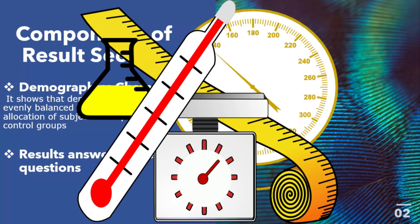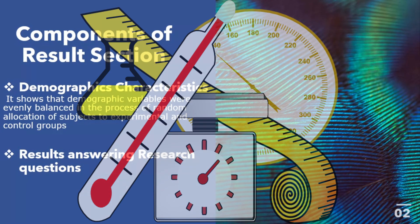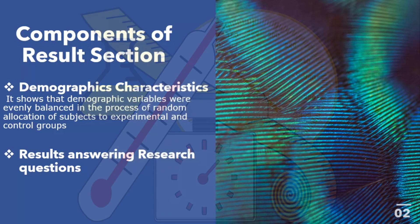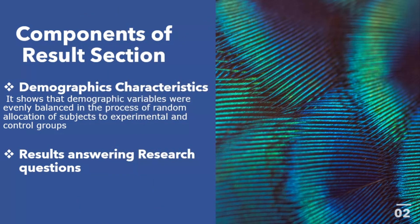Other important variables could also include anthropometric indices — for instance, if you measured BMI or blood pressure. However, not every study requires that. What this means is that your demographic characteristics should be present irrespective of the objective or aim of the study.